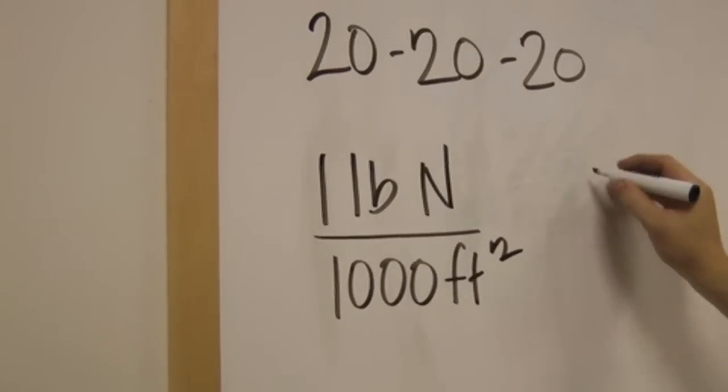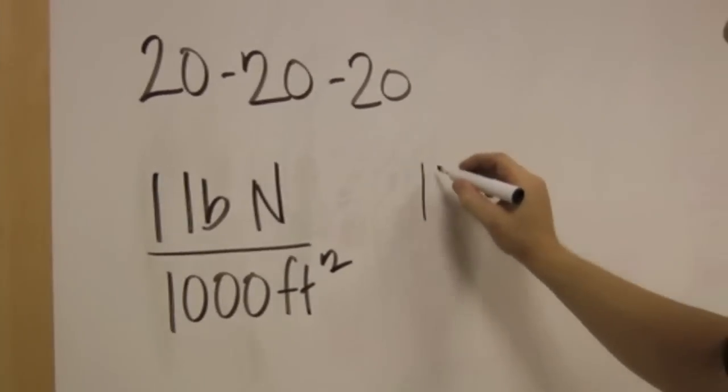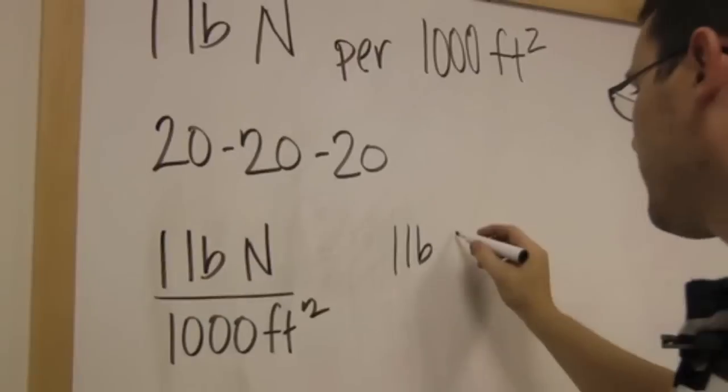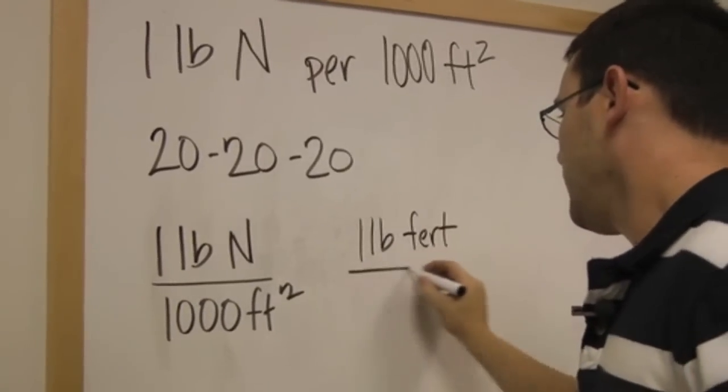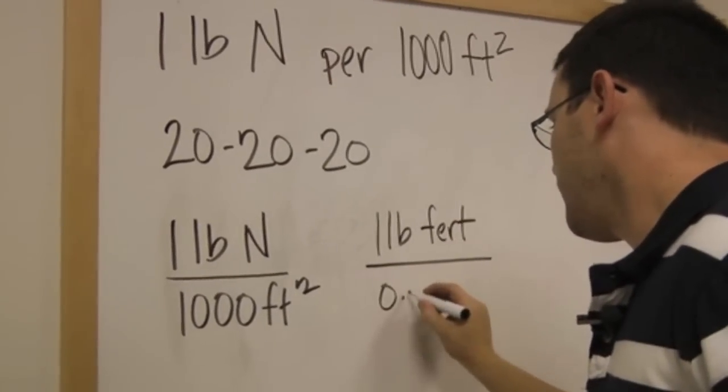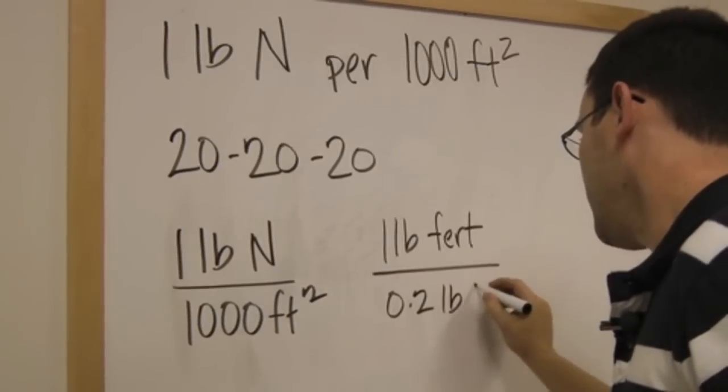Then we know that for every one pound of fertilizer, there is 0.2 pounds of nitrogen.